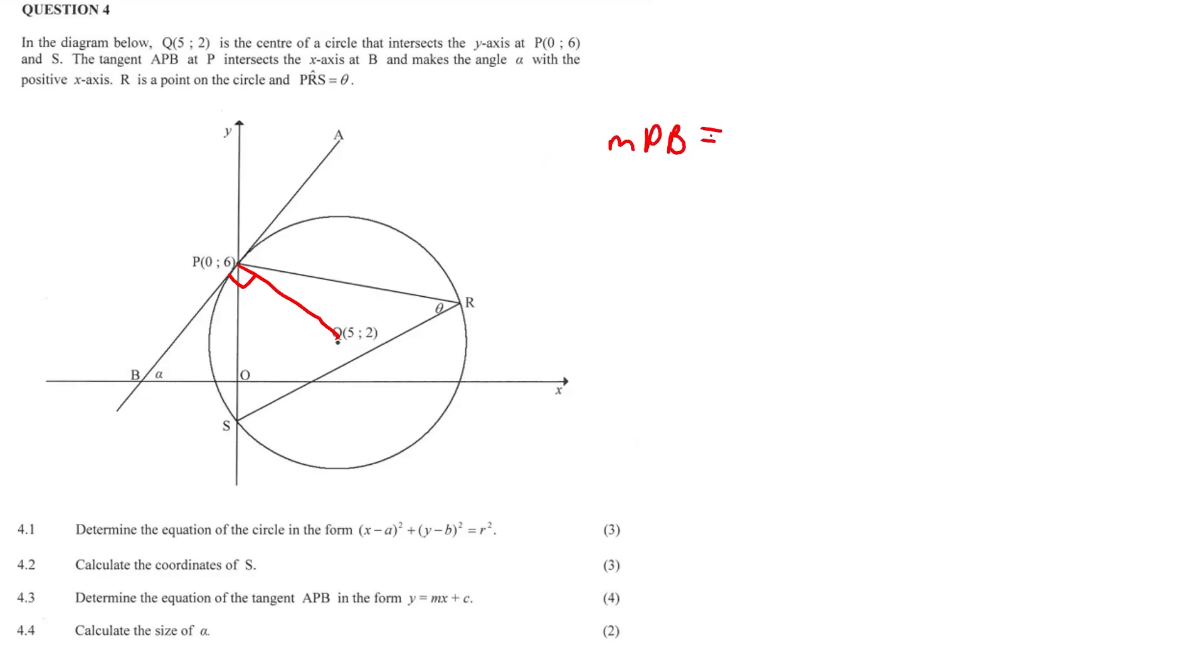MPB is equal to y2 minus y1, so 6 minus 2 over x2 minus x1. So we did the 6 minus 2, and now we're going to use 0 minus 5, x2 minus x1. Therefore, MPB is equal to negative 4 over 5. Okay.